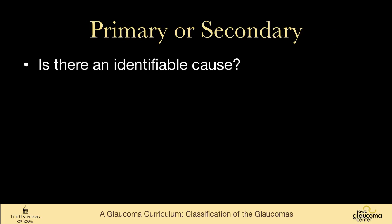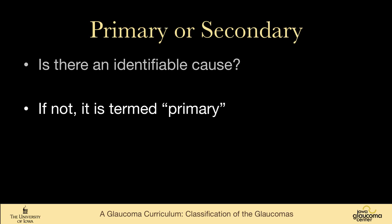We also classify glaucoma by whether there is an identifiable cause — is it a primary disease or is it secondary? If it's not identifiable as a secondary glaucoma, we call it primary. In other words, we really don't know why the patient has this disease.